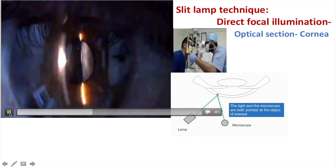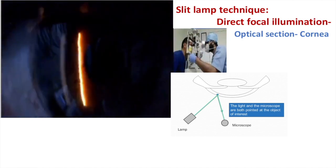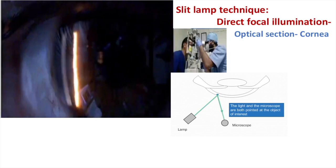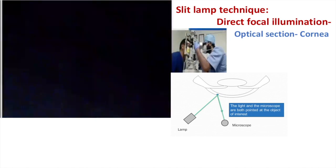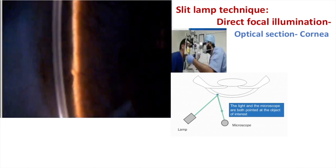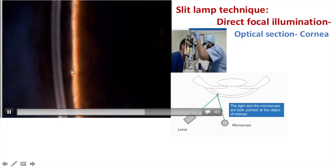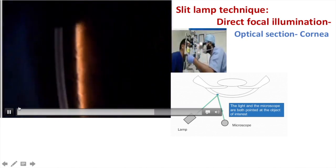I will take the slit to the periphery because the periphery of the cornea is thicker and it's easier to appreciate the layers. I'm magnifying the slit and increasing the illumination, and now we can appreciate the various layers of the cornea. This is the optical section of the cornea. The reflection you see is from the iris — our focus is right here, which is direct focal illumination.